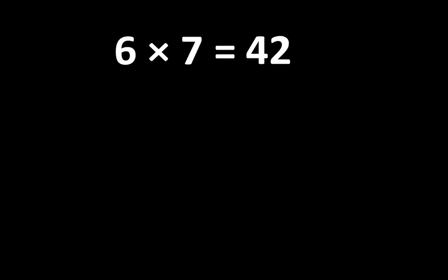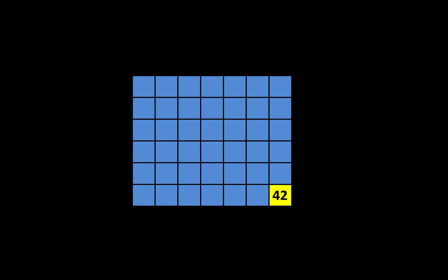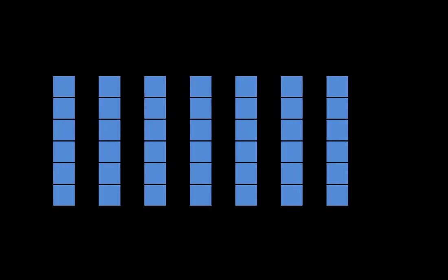So understanding 6 times 7 is more than simply knowing that the product is 42. Here is an array. We know that an array that is 7 by 6 will have a total of 42. And we also know that we can break 42 apart into 7 groups of 6, just like this. And when we put 7 groups of 6 together, the total is 42. And we can break 42 apart into 6 groups of 7, just like this. When we put 6 groups of 7 together, the total is 42.